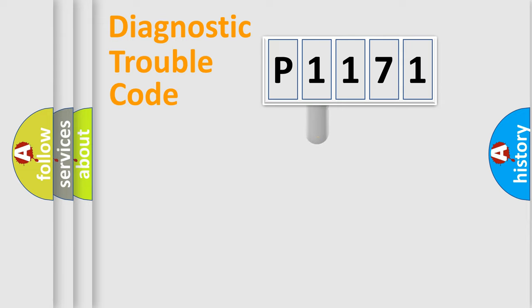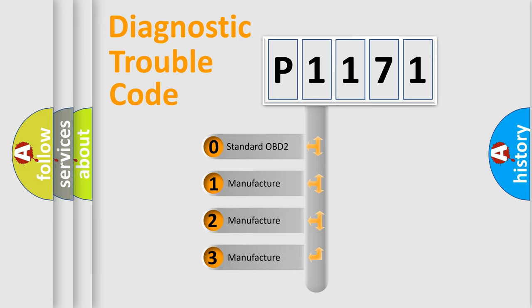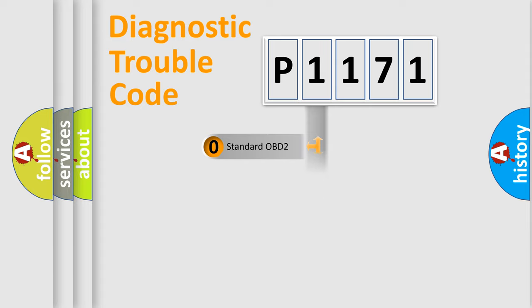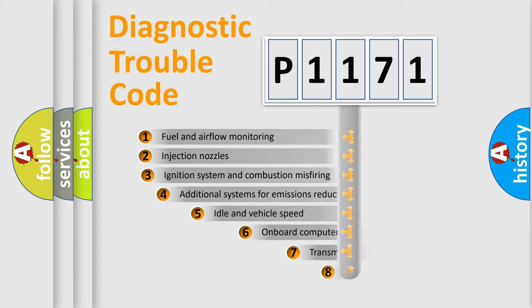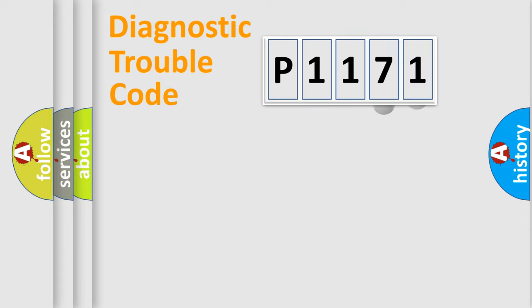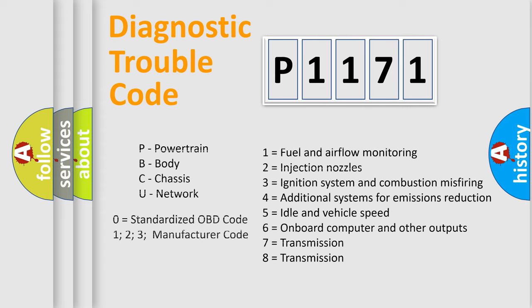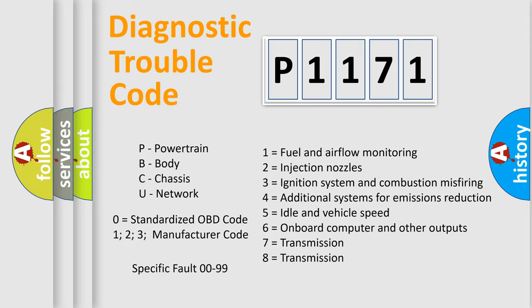This distribution is defined in the first character of the code. If the second character is expressed as zero, it is a standardized error. In the case of numbers 1, 2, or 3, it is a more specific expression of a car-specific error. The third character specifies a subset of errors. The distribution shown is valid only for the standardized DTC code. Only the last two characters define the specific fault of the group, and this division is valid only if the second character code is expressed by the number zero.